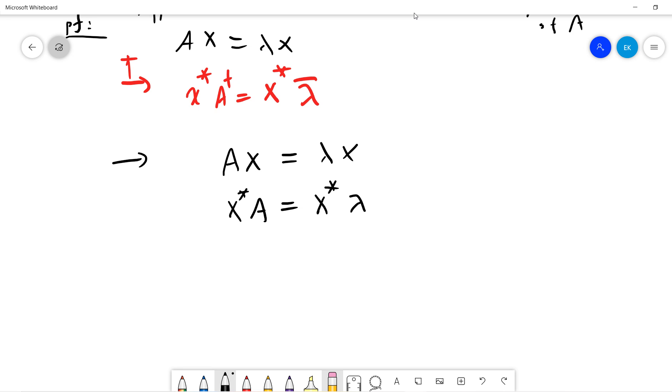We times x, so we get this. We times x, you get this. And then we can also times x dagger from the first equation, so we have this.